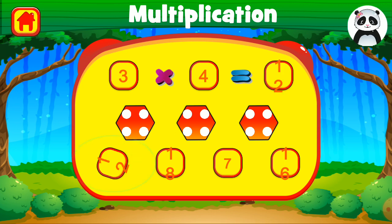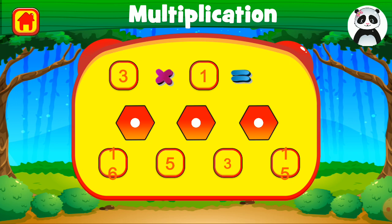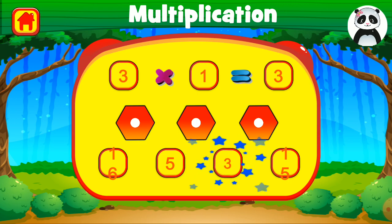3 times 1 equals 3. Once are 3. Well done. Thank you.